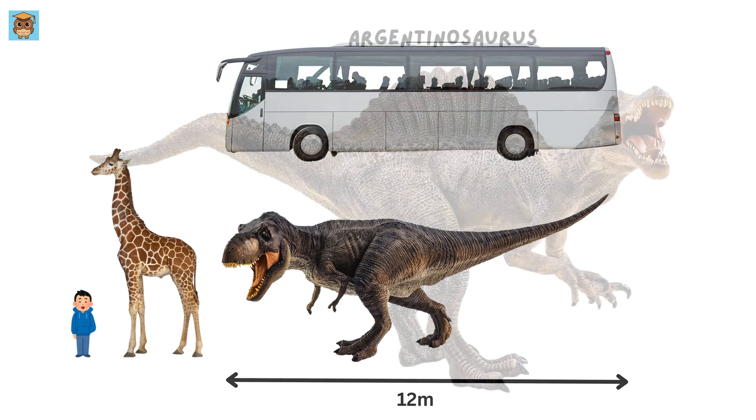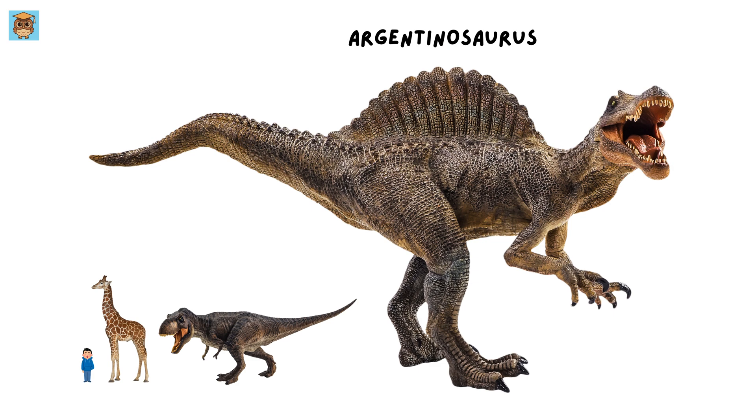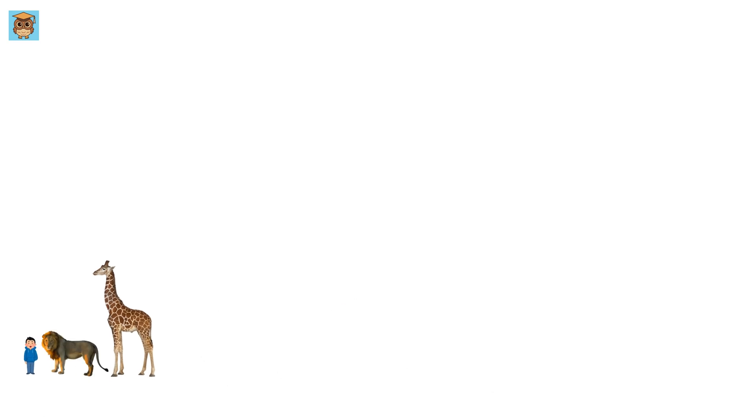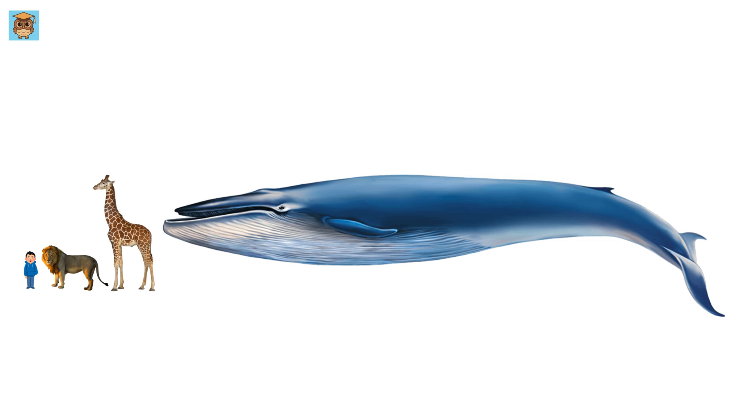And if that's not big enough, the Argentinosaurus, the biggest dinosaur we know, was a mind-blowing 35 meters long, about the size of a basketball court. And now, we reach one of the biggest living animals today, the blue whale. These gentle giants can grow up to 30 meters long, nearly the same as the Argentinosaurus.